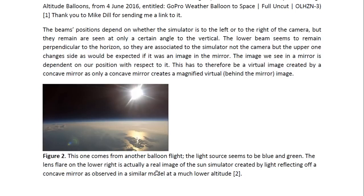And this is what we would expect them to use in the case of a simulator. Now this one comes from another balloon flight. The light source seems to be blue and green. And you can see this lens flare on the lower right here is actually a real image of the sun simulator created by light reflecting off the concave mirror. So this is where the concave mirror is. And there will be a projector at the focal point of the mirror. And it produces two images in that case, a virtual image behind the mirror. And that's what we see when we look at the mirror. And then it produces a real image from the light that is reflecting off the mirror.